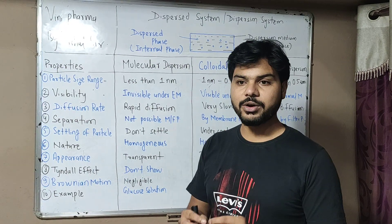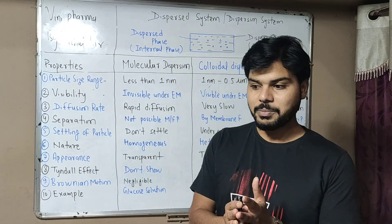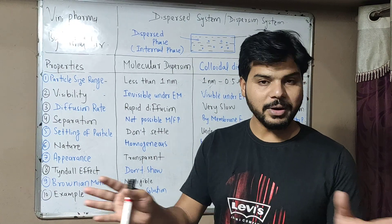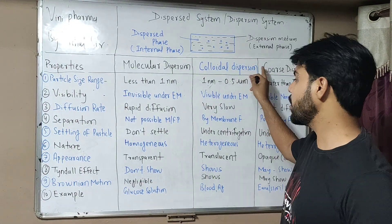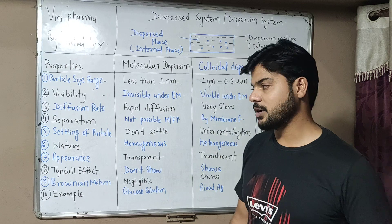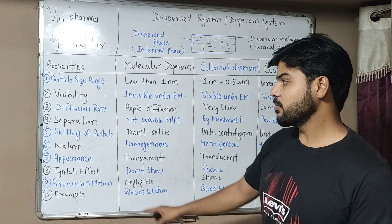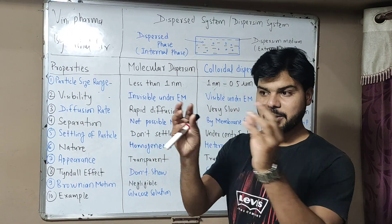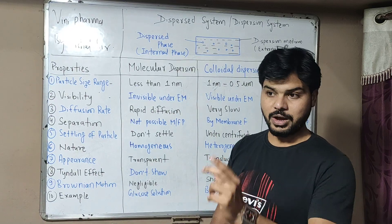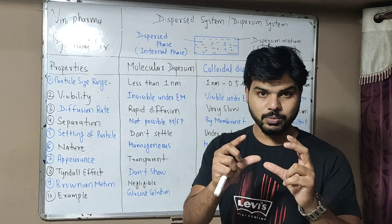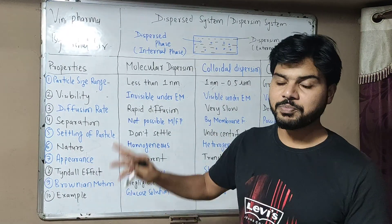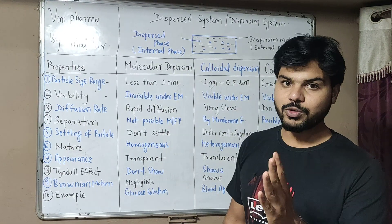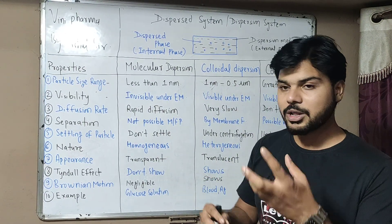Regarding nature: molecular dispersion is homogeneous. Colloidal and coarse dispersions are heterogeneous. For appearance: molecular dispersion is transparent. Colloidal dispersion is translucent — it shows a little cloudiness.